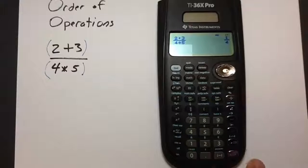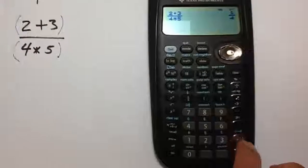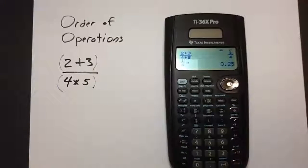We get 1 quarter. If you want this in decimal form, you can press the button right above enter that has the two arrows on it. And we get 0.25 for our answer.